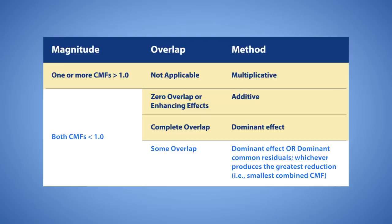If you expect some overlap, the dominant effect or dominant common residuals method may be appropriate. Try both and select the method that produces the largest combined reduction, or smallest CMF. The dominant effect method tends to work well when one or both individual effects are large. The dominant common residuals method tends to work well when the individual effects are not large.